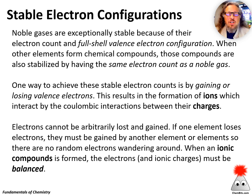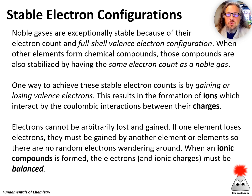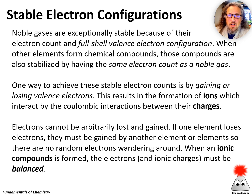The most important thing here is that when electron clouds interact — when atoms interact — what they're trying to do is achieve a stable electron configuration. The most stable electron configurations we come across in the periodic table are those of the noble gases. Noble gases are very unreactive because they have a very stable electron configuration.